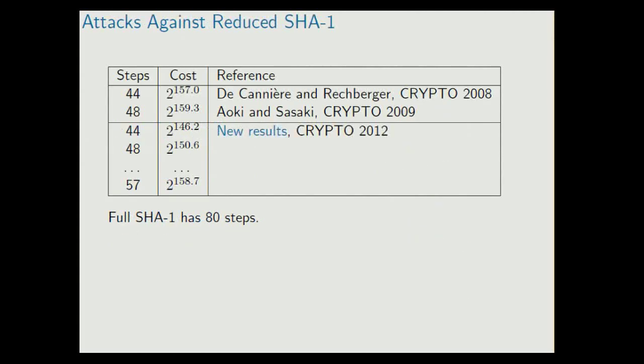The first such pre-image attack on reduced variant of SHA-1 was presented at Crypto 2008 by De Cannière and Rechberger. It worked for 44 steps and was about 8 times faster than brute force. Only one year later, at Crypto again, Aoki and Sasaki presented an attack on 48 steps. And the results that we can obtain in this paper work up to 57 steps. And for previously considered variants, we have faster attacks, about 2 to the 10 times faster.